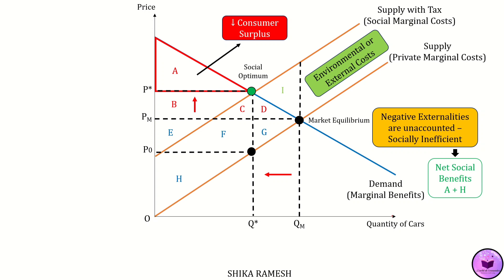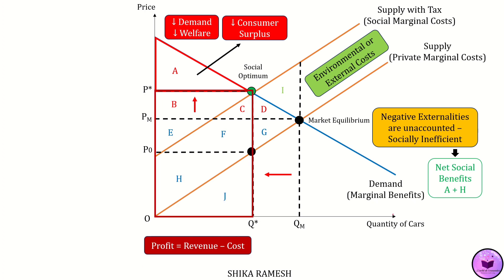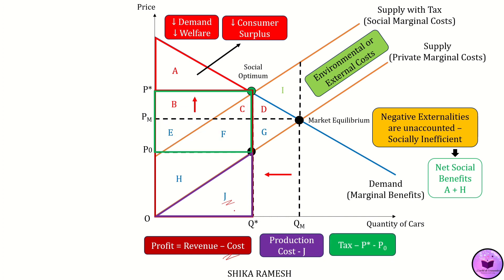For the producers, their total revenue is calculated as P star times Q star, represented as B plus C plus E plus F plus H plus J. Producers' profit is calculated as revenue minus cost. Producers have two costs: the production cost — the area under the original private marginal cost curve J — and the tax per automobile sold till Q star, which is the difference between P star and P zero, represented by the area B plus C plus E plus F. This is also the vertical distance between the private marginal cost curve and social marginal cost curve at quantity Q star. Hence, subtracting these two costs from the total revenue, we get the area H. The producer surplus has also decreased to area H.